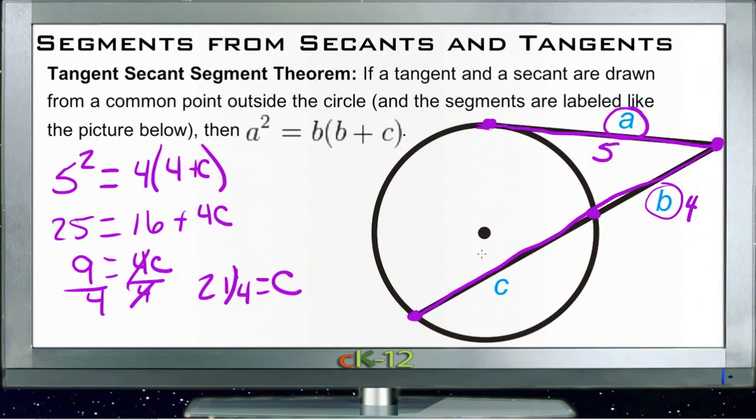So that tells us that this segment down here would be quite a bit shorter than the other two, if this length was 5 and this length was 4. We're going to have a couple of examples like this in your example questions, but you'll find that they're pretty straightforward.